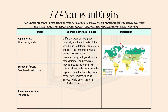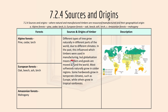7.2.4 covers sources and origins — where natural and manufactured timbers are resourced or manufactured based on their geographical origin. Pine, cedar, and larch come from alpine forests. Oak, beech, and birch come from European forests. Mahogany comes from Amazonian forests. Different trees grow in different parts of the world due to different climates, but globalization means timber can now move around the world. Most softwoods grow in colder regions, some hardwoods grow in temperate climates like Europe, while others grow in tropical rainforests such as Malaysia.